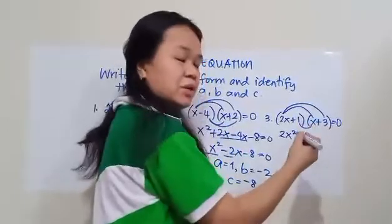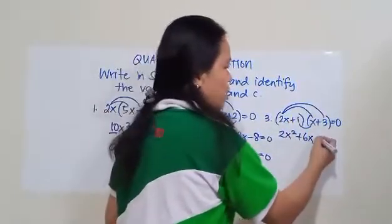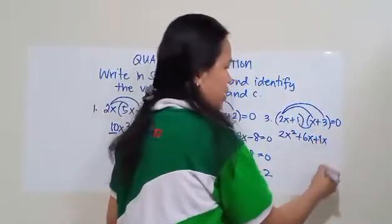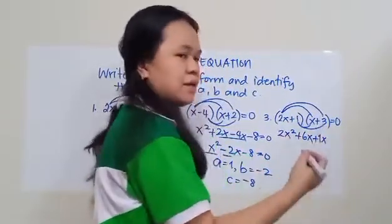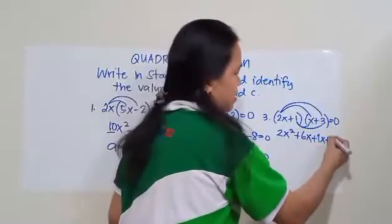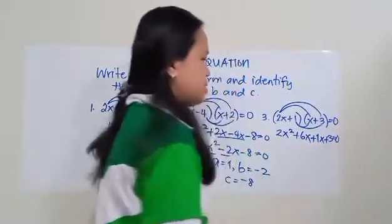Multiply the inner terms. So 1 times x is 1x. So let us write 1x. Then 1 times 3 is 3. So that is positive 3. Equals 0.